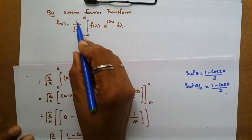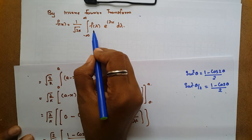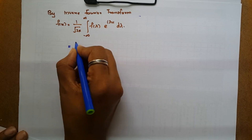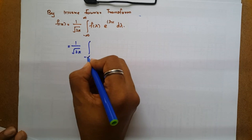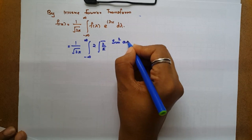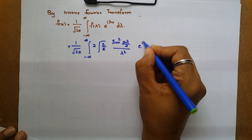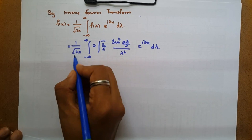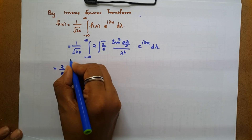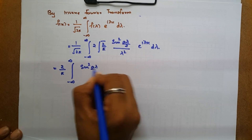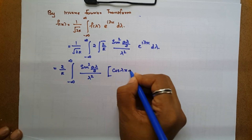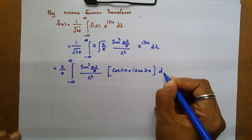By inverse Fourier transform, f(x) = 1 by root 2π times the integral from minus infinity to infinity of F(λ) times e raised to iλx dλ. Substituting F(λ) = root(2/π) times 2 sin²(aλ/2) / λ², the root 2 terms cancel with root π, giving 1/π times the integral from minus infinity to infinity of 2 sin²(aλ/2) / λ² times (cos λx + i sin λx) dλ.